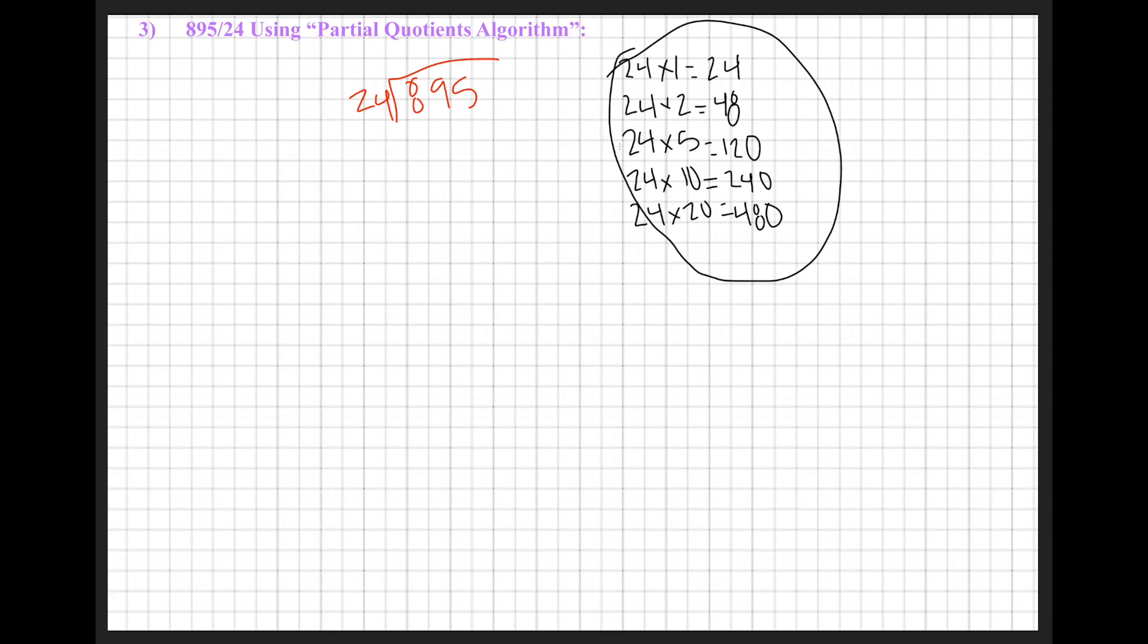These are the multiples of 24 that I'm familiar with, so they'll be the multiples that I use to break down this 895 by using multiples of 24. The first thing I'm going to do is the biggest multiple that I'm comfortable with is 24 times 20 equals 480, so I'm going to use that as my first example.